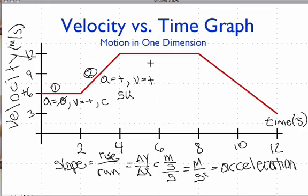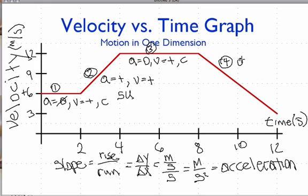Section three is similar to section one — acceleration is zero and all velocities are positive, so we're going at constant speed. Section four is interesting: the line has a negative slope, so the acceleration is negative and points in the negative direction. However, all the velocities are still positive, meaning we're going in the positive direction. When the acceleration vector and velocity vector point in opposite directions, we are slowing down.